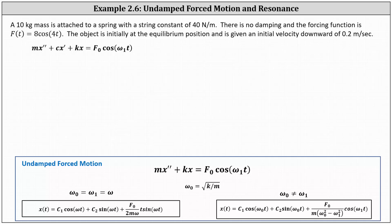Welcome to an example of undamped forced motion of a mass on a spring. We'll be solving this problem using the formulas derived in a previous lesson. A 10 kilogram mass is attached to a spring with a spring constant of 40 newtons per meter. There is no damping, and the forcing function is F(t) = 8cos(4t). The object is initially at the equilibrium position and is given an initial velocity downward of 0.2 meters per second.